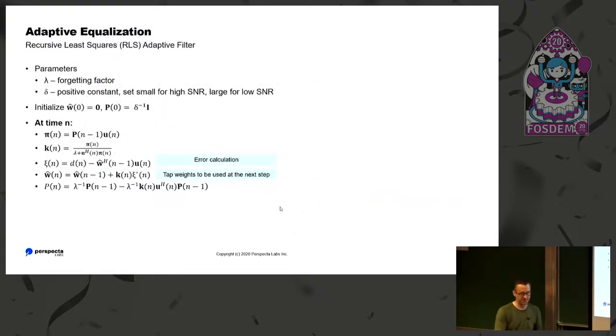And then RLS, it's a recursive solution to the MMSE problem. We're assuming that recursively all of the decisions we made in our tap updates have built up. And so there's a forgetting factor, which says how much of the previous calculation am I going to include in the next step? And then here's the math here. It's not terrible. There's just a few matrix multiplies, which makes it more computationally intensive than the LMS. But it converges very quickly.